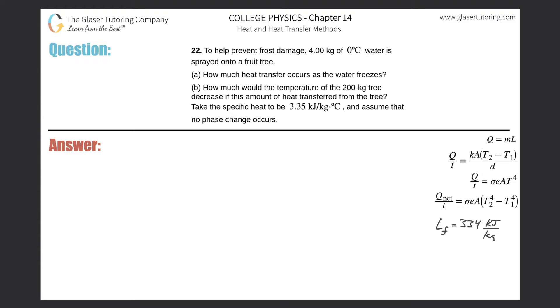Number 22: To help prevent frost damage, 4.00 kg of 0°C water is sprayed onto a fruit tree. Part A: How much heat transfer occurs as the water freezes? All right, so this is actually fairly straightforward.